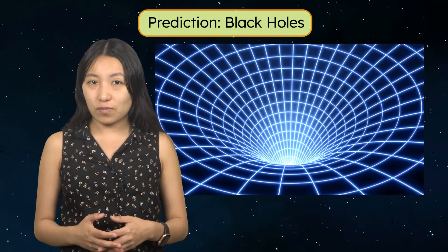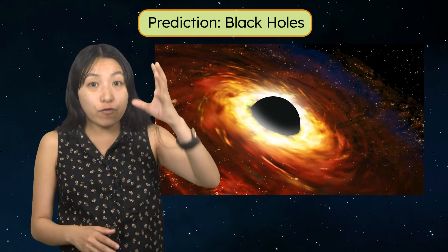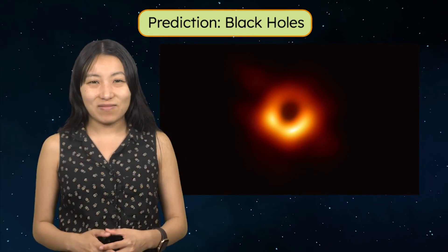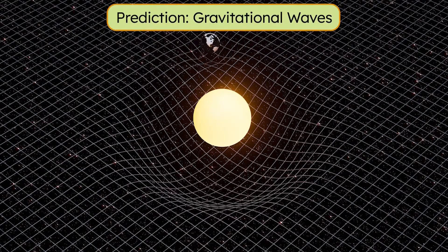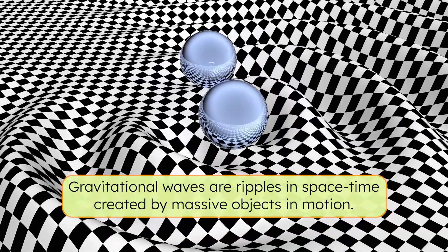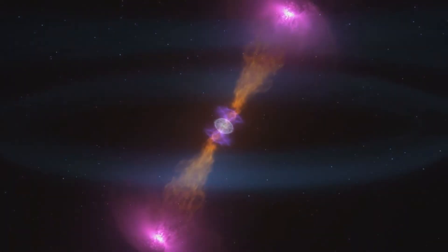Einstein's equations also hinted at the existence of objects so massive and compact that they would warp space-time to the extreme — black holes. For many years, black holes were considered purely theoretical, but over time evidence mounted, including the discovery of X-rays from matter falling into black holes. We've now even captured the first image of a black hole's shadow, confirming their existence. One of the most recent confirmations came in 2015 with the first detection of gravitational waves — ripples in space-time created by massive objects in motion, like two black holes spiraling toward each other. These waves carry information about the mass and speed of the objects that created them, opening an entirely new way to explore the universe.